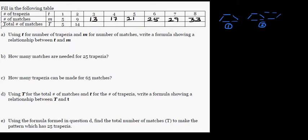The total number of matchsticks is the cumulative sum. For one trapezia you need five matchsticks. For the second pattern, five plus nine is fourteen. For the third, you add thirteen, giving twenty-seven. You can finish filling in the rest of that column.